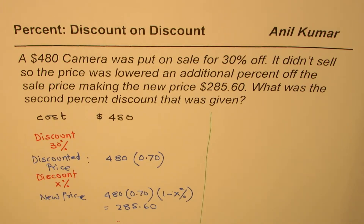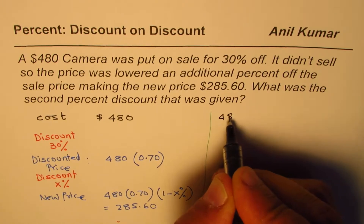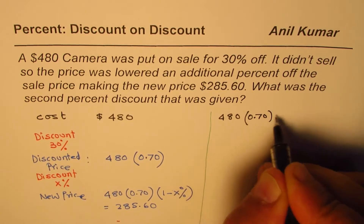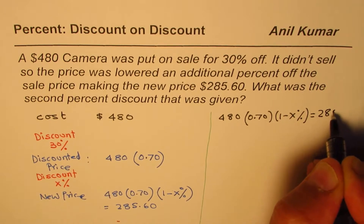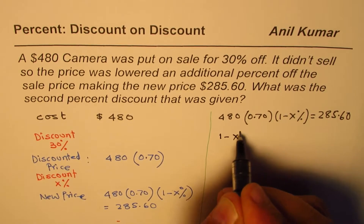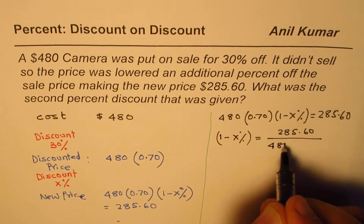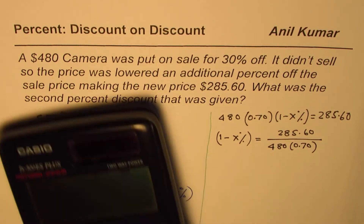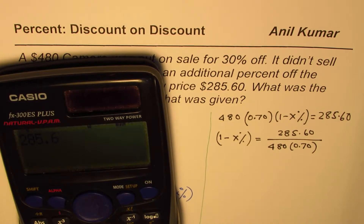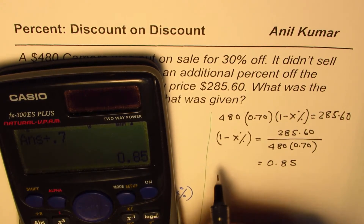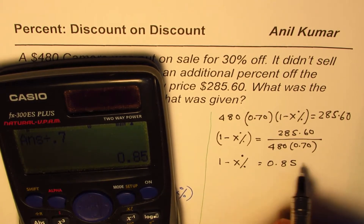Using this formula: 480 times 70%, which is also (1 minus 30%) = 0.70, times (1 minus X%) equals 285.60. We rearrange: (1 minus X%) = 285.60 divided by 480 times 0.70. Calculating: 285.6 divided by 480 and then divided by 0.7 gives us 17 over 20, which equals 0.85.